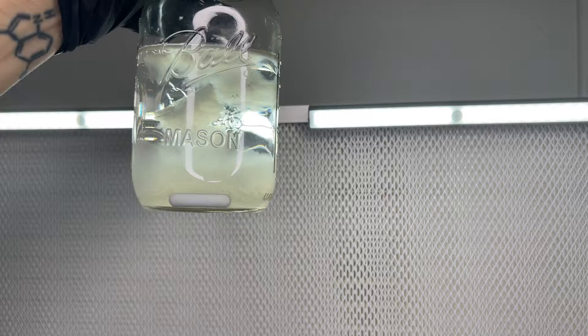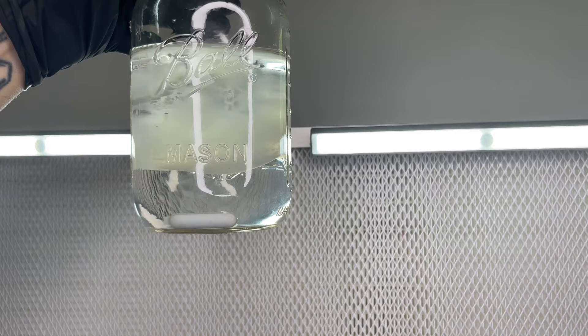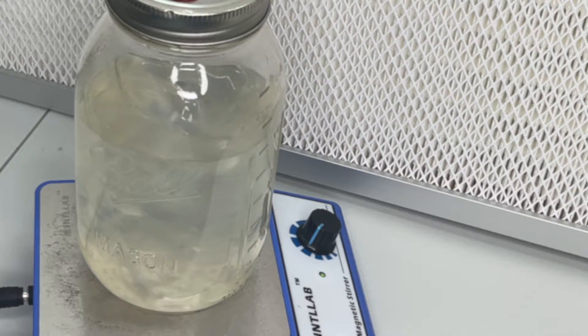If the mycelium starts growing on the surface of the liquid culture, make sure to use the magnetic stir bar every day, or else the mycelium will form a pellicle on the surface, which will make it hard to make into syringes.